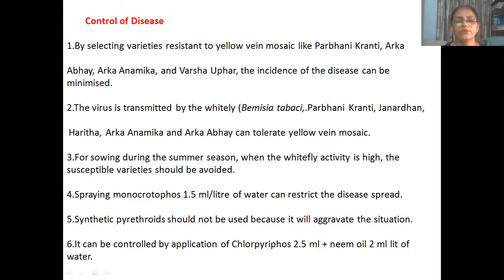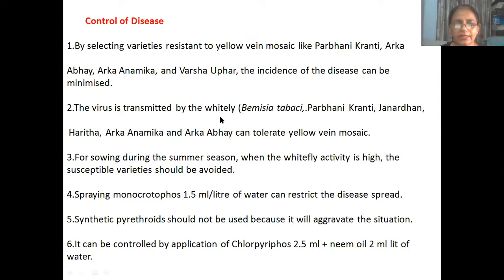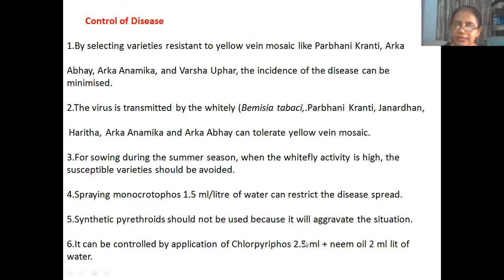For control of the disease, by selecting resistant varieties of yellow vein mosaic such as Kribani, Kranti, Akra Varsha, Pahar, and Akra Namika, the incidence of disease can be minimized. Sowing during the summer season when white fly activity is high should be avoided. Spraying of monocrotophos 5.5 ml per litre of water can restrict the disease spread. It can also be controlled by the application of chlorpyrifos 5.5 ml and neem oil 2 ml per litre of water.